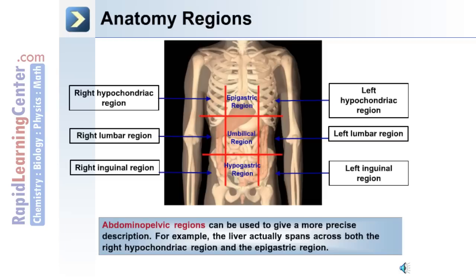The abdominal pelvic area can also be divided into nine anatomy regions. Beginning at the top where the ribcage is, is the epigastric region; underneath this is the umbilical region, and in the pelvic area the hypogastric region. To the left and right are the right hypochondriac region, the right lumbar region, and the right inguinal region. Abdominal pelvic regions give a more precise description because, for example, the liver actually spans across both the right hypochondriac region and the epigastric region.